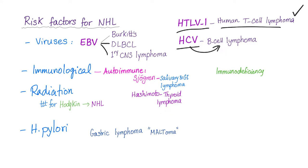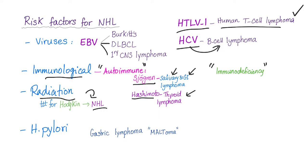Immunological risk factors could be either autoimmune disease or immune deficiency syndrome. Autoimmune examples include Sjögren's leading to salivary lymphoma, GI lymphoma, or Hashimoto's leading to thyroid lymphoma. Radiation exposure can lead to non-Hodgkin's lymphoma. Notably, radiation used to treat Hodgkin's lymphoma can itself lead to non-Hodgkin's — so you're trying to cure Hodgkin's and end up with non-Hodgkin's. H. pylori can lead to gastric lymphoma — mucosa-associated lymphatic tissue lymphoma, or MALToma.